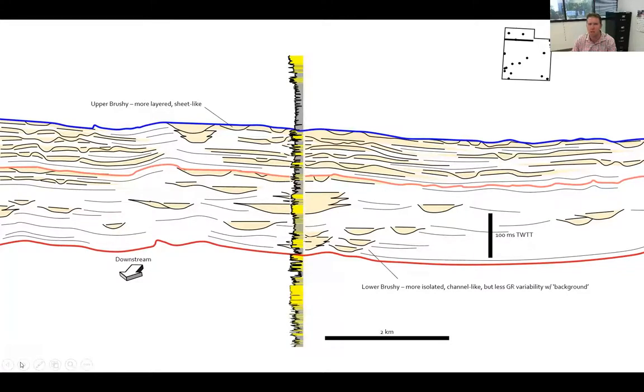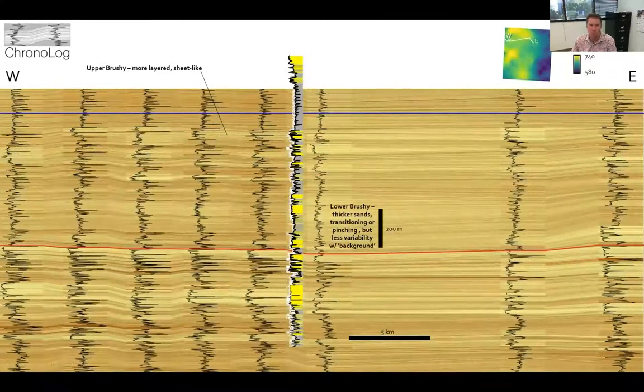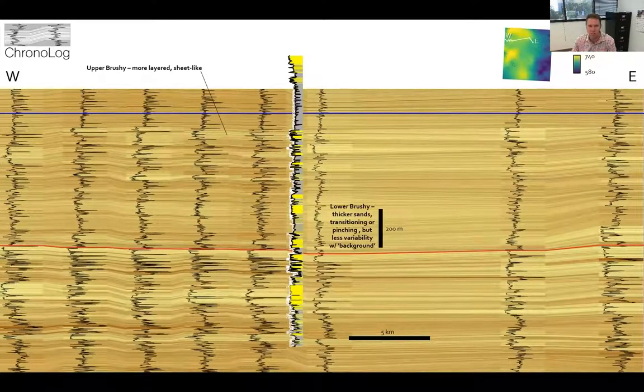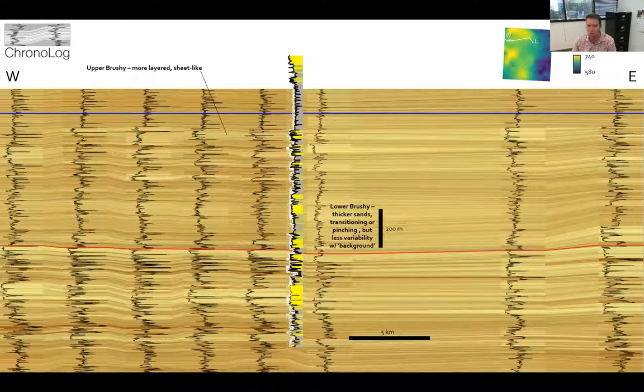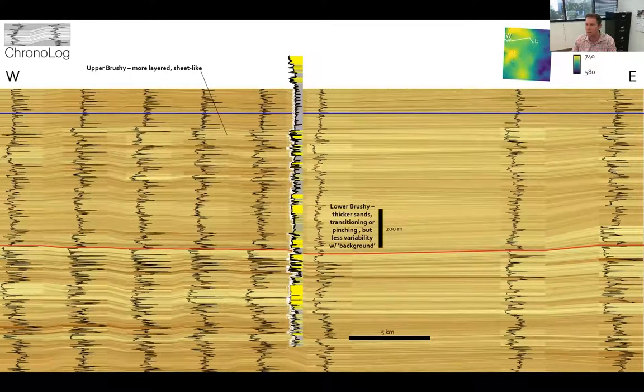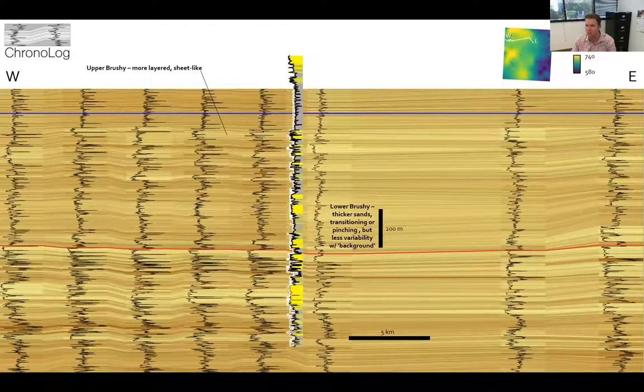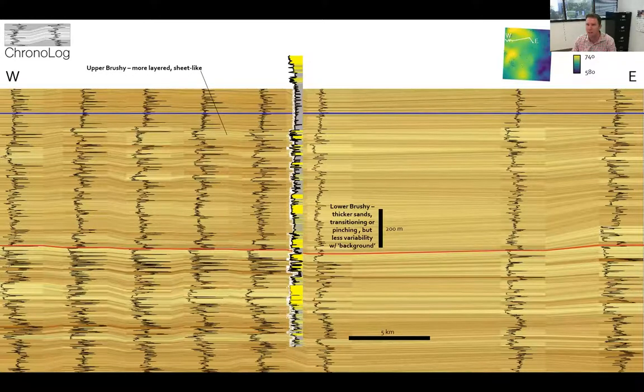So this leads us to an interpretation of something like this, with more isolated thick channel deposits in the lower Brushy and thinner, more layered sheet-like deposits in the upper Brushy. We can take this interpretation from our Fairfield data a step farther by leveraging a tool our lab has developed called ChronoLog. ChronoLog correlates logs in 3D. We use it all the time and we really can't imagine correlating hundreds of thousands of logs in the Permian Basin or other data dense basins without it. Here we're looking at a west-east approximately strike section similar to the depositional model in the previous slide. You can see the lower Brushy has these more isolated sand packages, transitioning or pinching, with a little bit less variability with background deposits that are laid down as a result of background sedimentation, raining out of suspension. And then in the upper part of the Brushy, you can see much more layered, more layered like sheet-like geometries in the ChronoLog section.